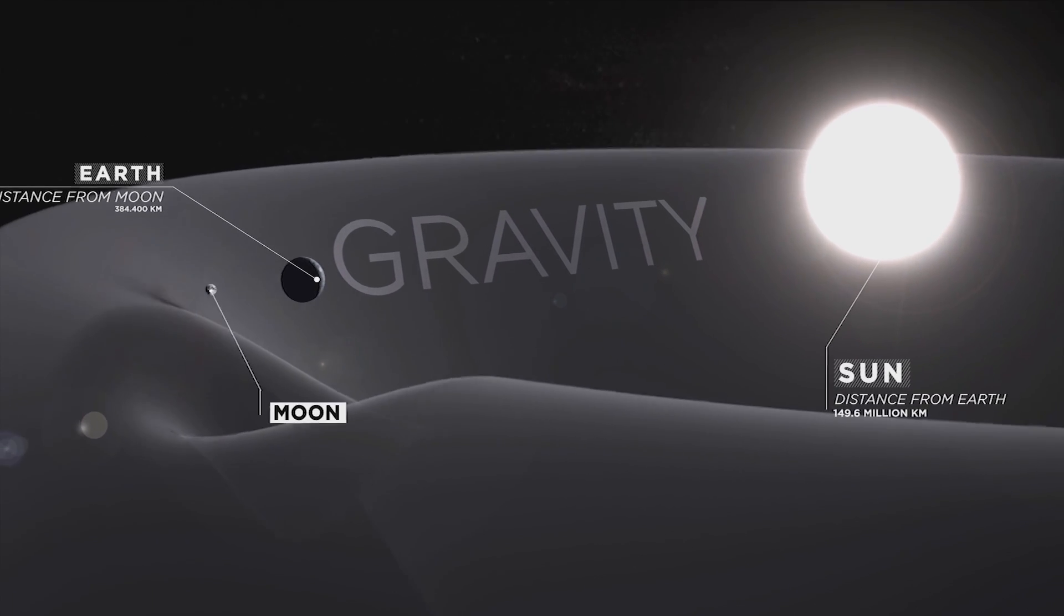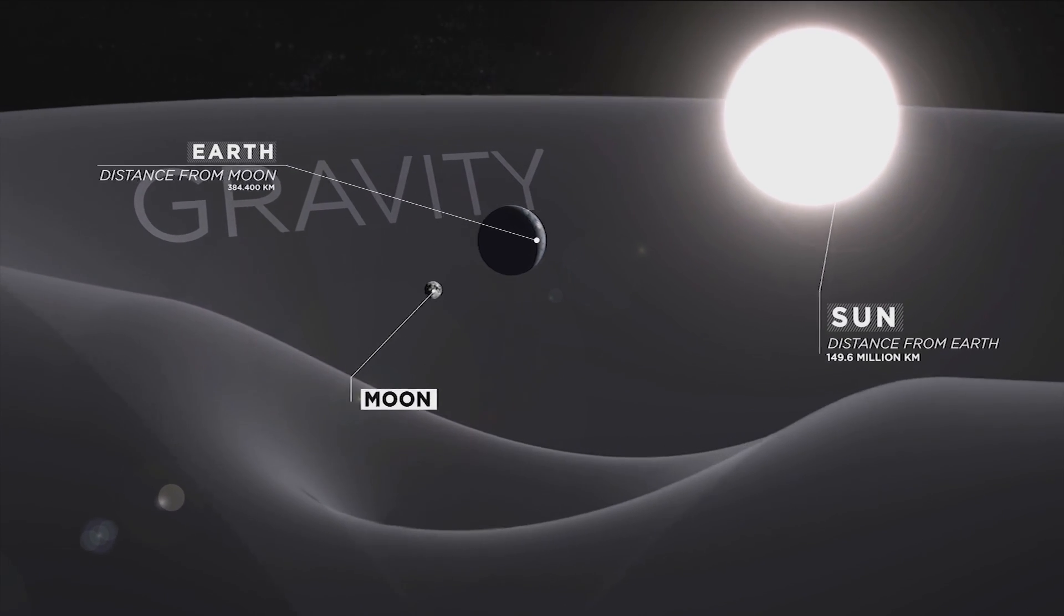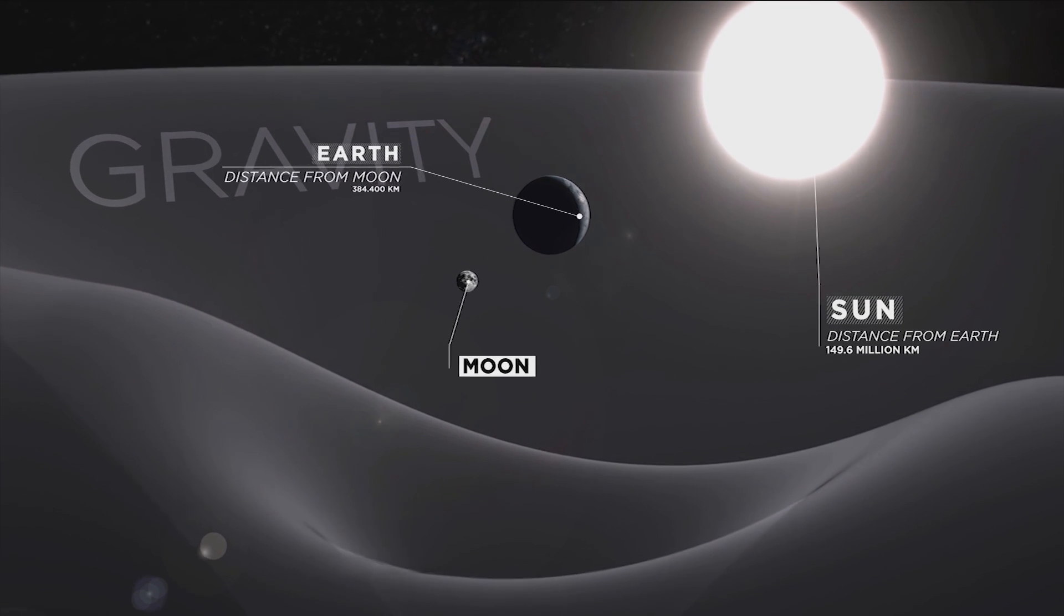Located on a Lagrangian point between the Earth and the Moon, the Momentum Virium lunar habitation concept pushes the boundaries of human innovation.